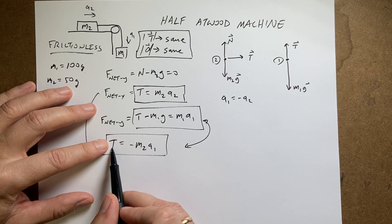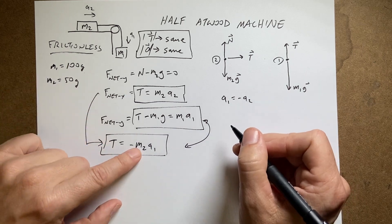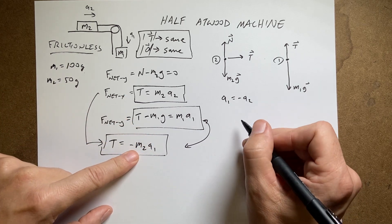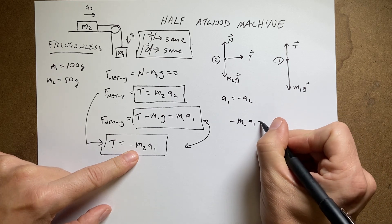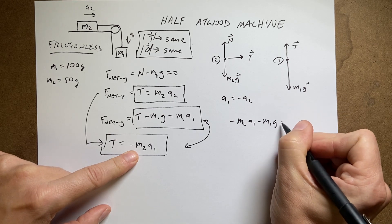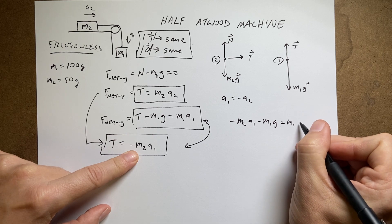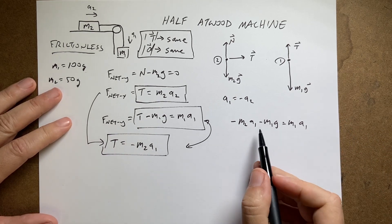So this equation becomes t equals negative m2a1. But now I have two equations with two unknowns. With the two unknowns being a1 and t. So I can solve these. Let's go ahead and substitute t in up here. Put this in for that t. So I get negative m2a1 minus m1g equals m1a1. And I want to solve for a1.